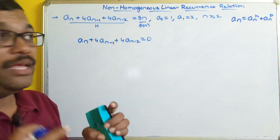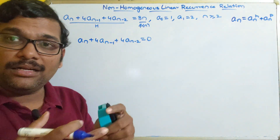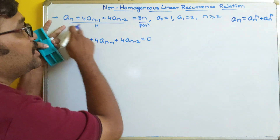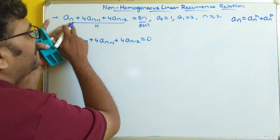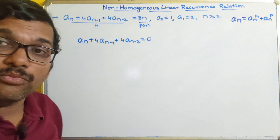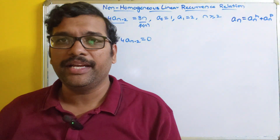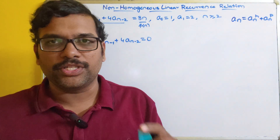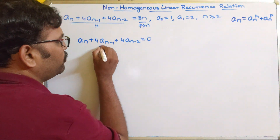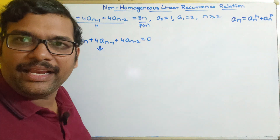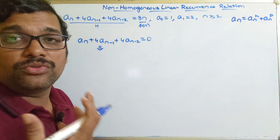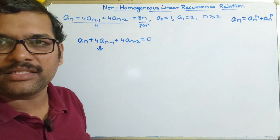That is the homogeneous because here the nth term depends only upon the previous two terms. But in the given question, the nth term depends upon the previous two terms as well as 8n, which is a multiple of n — what we are calling the function f(n). So for this we first have to convert it into an auxiliary equation, as we have seen in different problems for solving homogeneous linear recurrence relations.